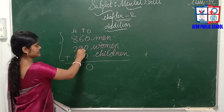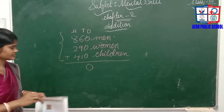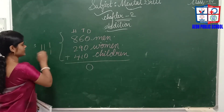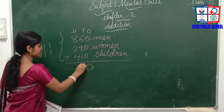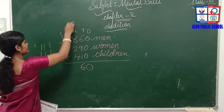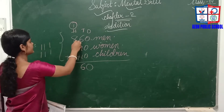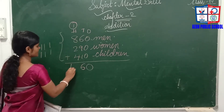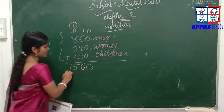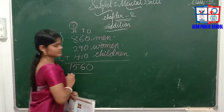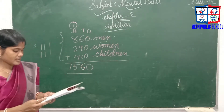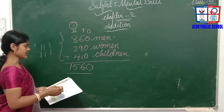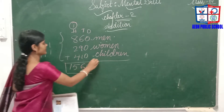6 plus 9 is 15, plus 1 is 16 — write 6 and carry 1. So the total number of members in the hall is 1,560 people.